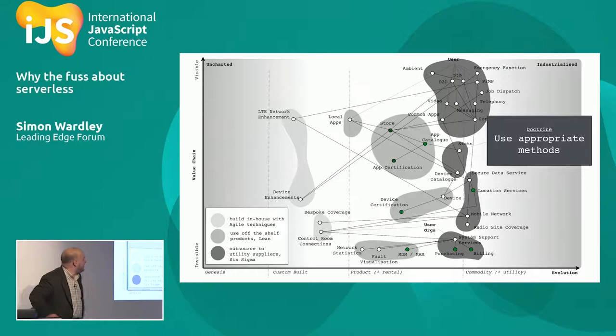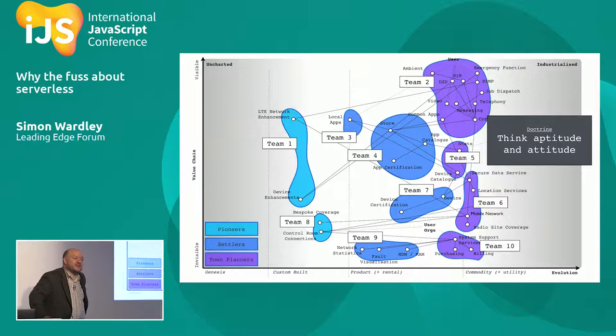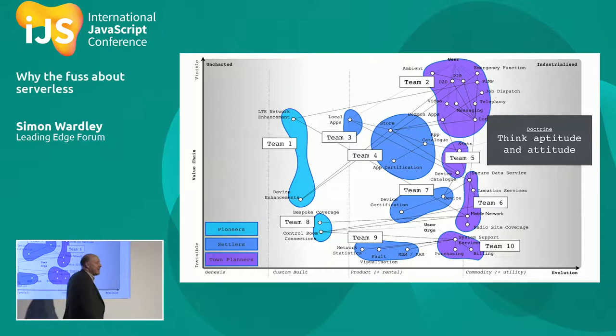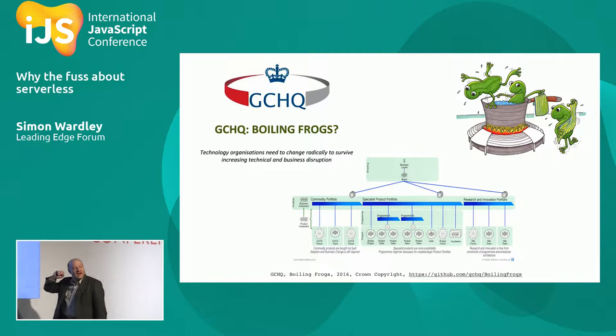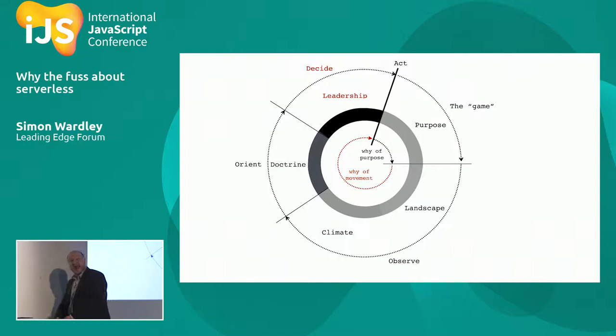You also learn to think small as in small teams, and then think about aptitude and attitude — because the culture you need here is different from here, which is different from here. That's a system called Pioneers, Settlers, and Town Planners. You can read more about that in something called 'Boiling Frogs' — that's GCHQ; they've open-sourced this document. Get a chance, look it up online.